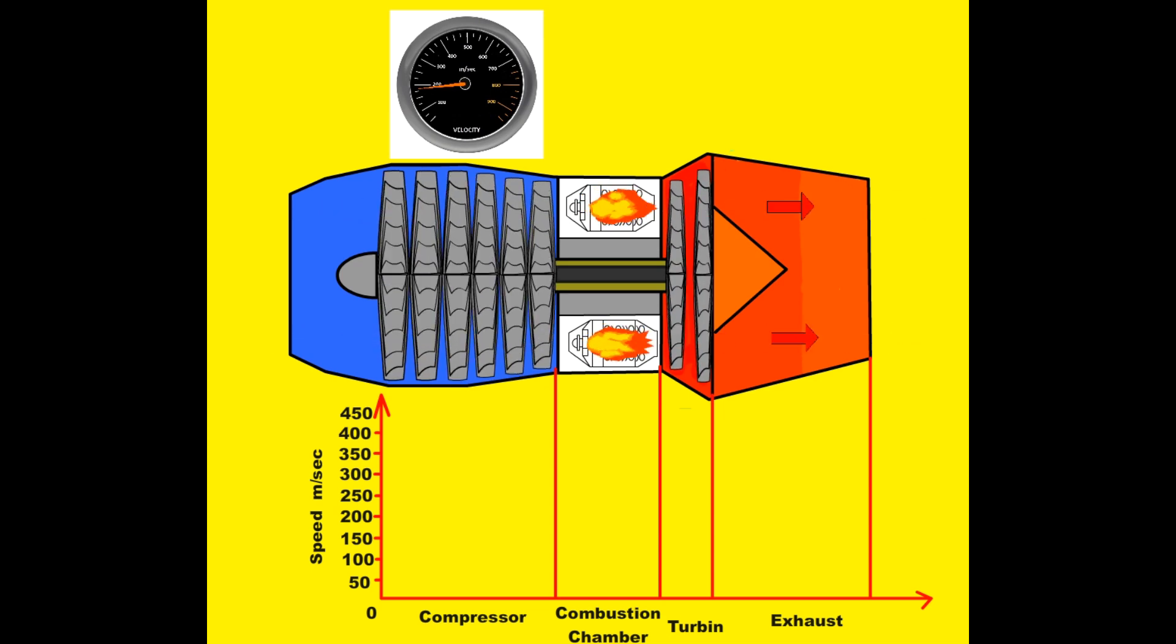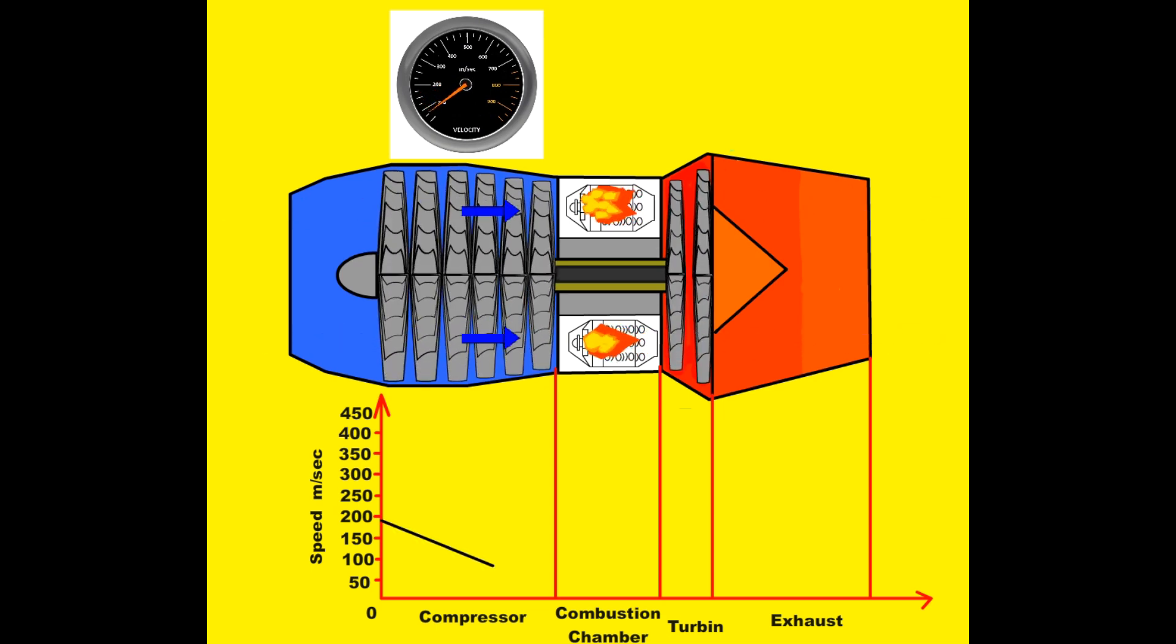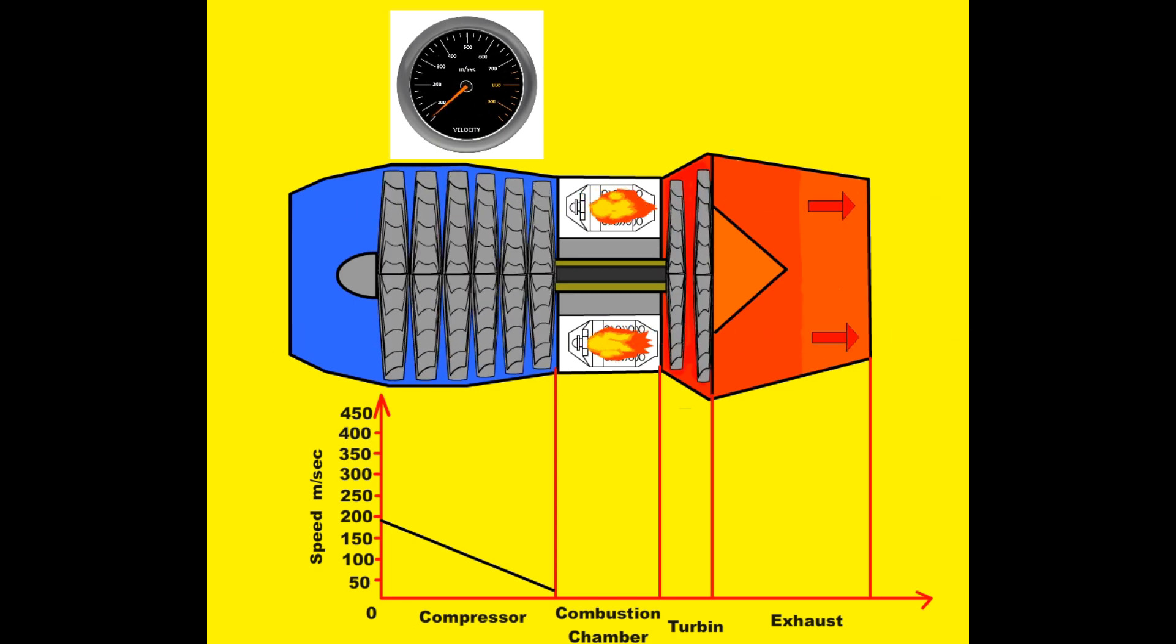When we examine the graph in terms of the speed parameter, we can see that the speed of the air taken into the compressor is reduced for efficient combustion. Depending on the speed of the aircraft, the air entering the compressor at high speeds is slowed down at each stage and reduced to 25 meters per second.